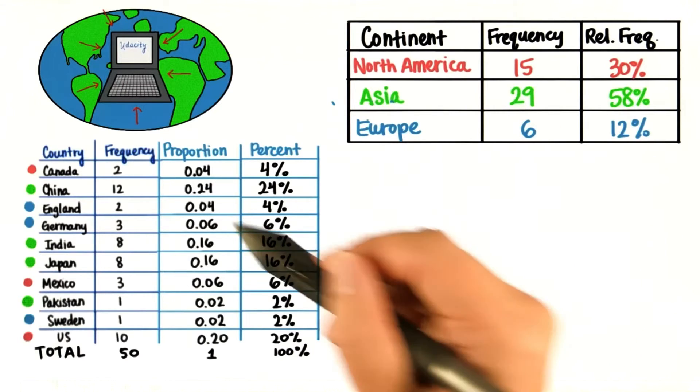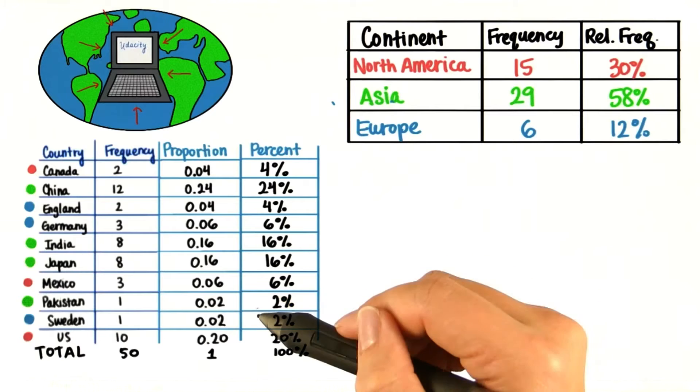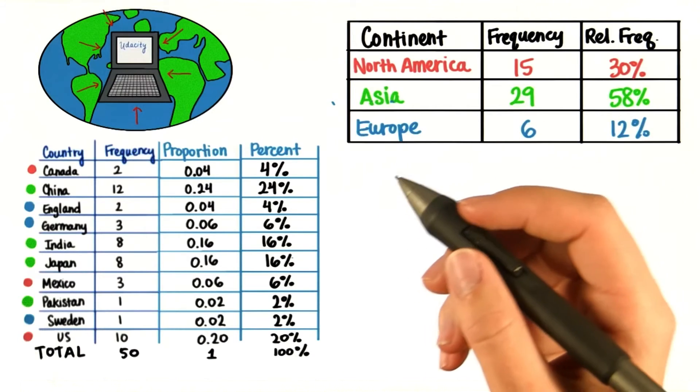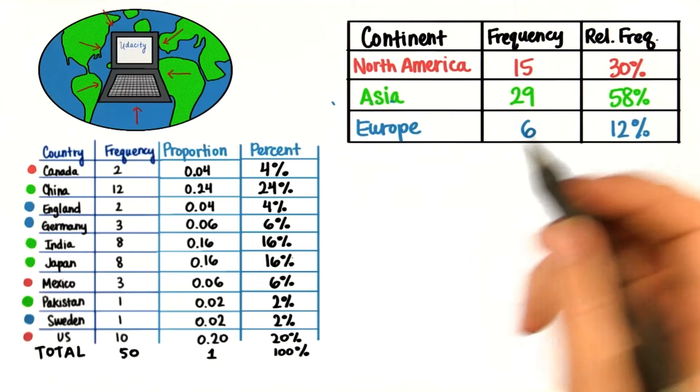In other words, information about specific countries. When creating frequency distribution tables, there can sometimes be a trade-off between convenience and informativeness.